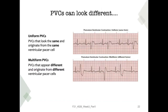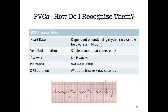PVCs can look different. Uniform PVCs look the same and originate from the same ventricular pacing cell. Multiform PVCs appear different and originate from different ventricular pacing cells. To recognize them: the heart rate is dependent on the underlying rhythm — you count only the regular QRS complexes, not the PVCs. In this strip the heart rate is 50 beats per minute. Single ectopic beats come early with no P waves before them, the PR interval is not measurable, and the QRS of PVCs is wide and bizarre — typically greater than 0.12 seconds.